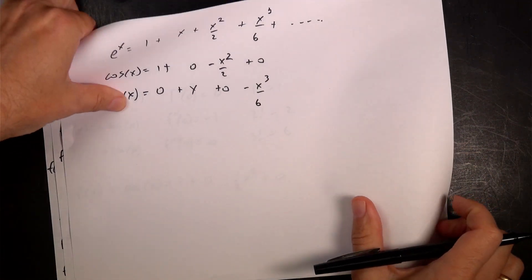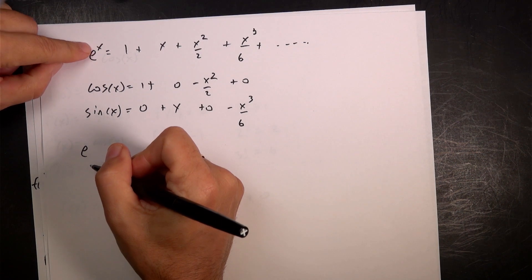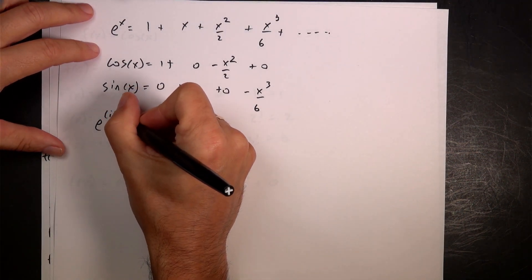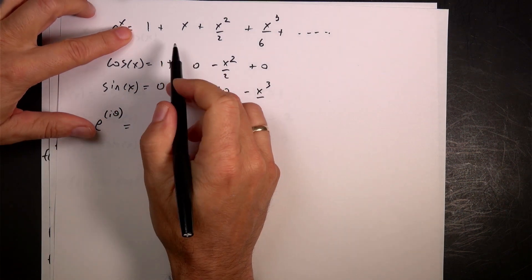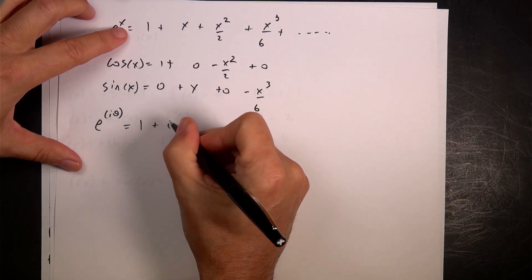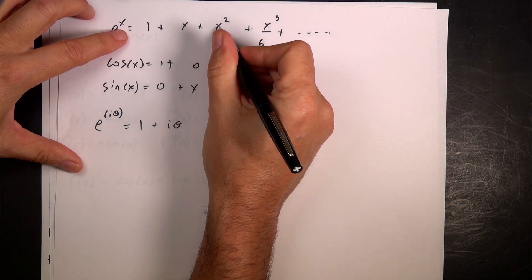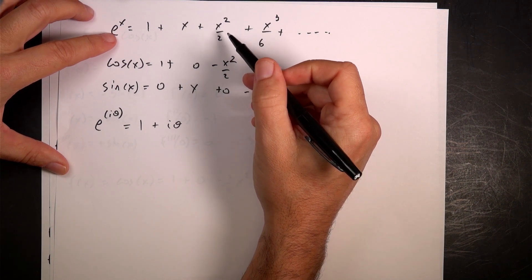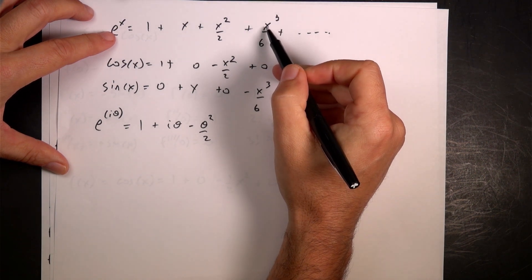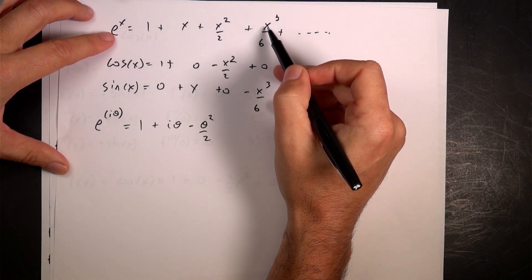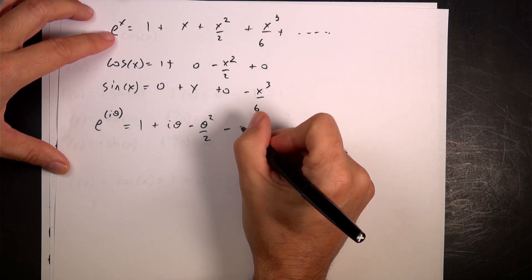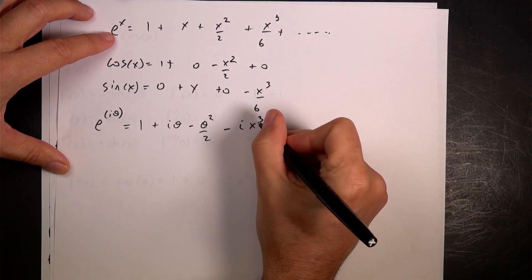Now let's do e to the i·theta — instead of x, I'll use i·theta, replacing all the x's with i·theta. So I have one, plus i·theta, plus i squared·theta squared over two — and i squared is negative one, so I get negative theta squared over two. And then for the cubic term I have i cubed — i times i is negative one, times i is negative i — so I get negative i·theta cubed over six.